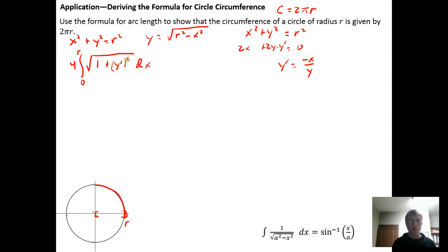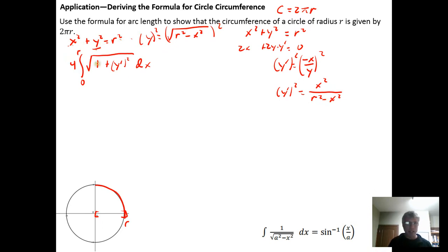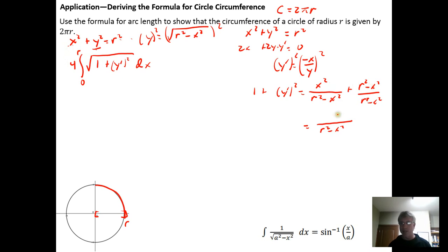In the arc length formula we square the derivative, giving y prime squared equals x squared over y squared. We substitute y squared equals r squared minus x squared, then compute one plus y prime squared by getting a common denominator: one plus x squared over (r squared minus x squared) equals r squared over (r squared minus x squared), since x squared minus x squared cancels to zero.